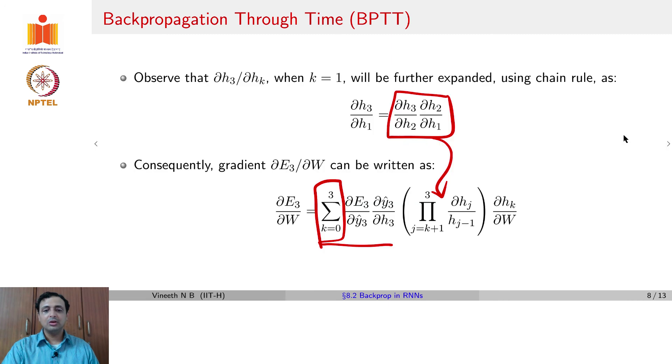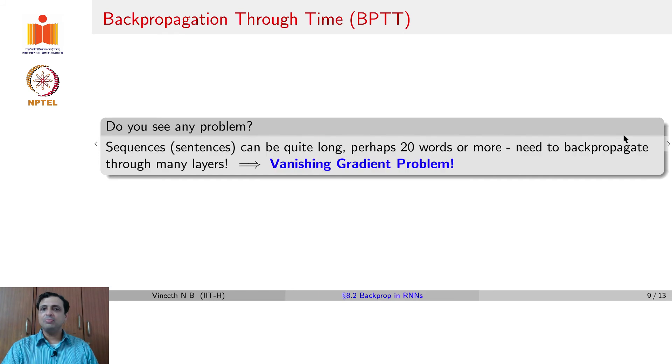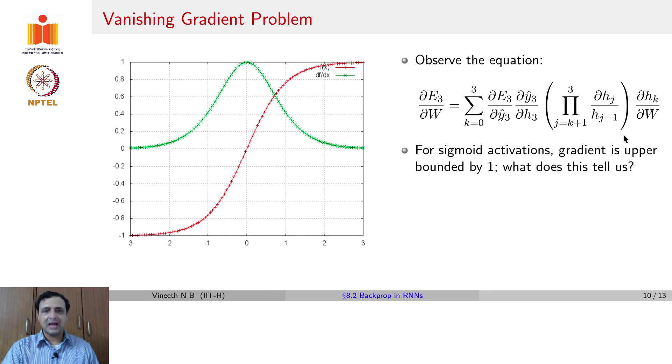So if you saw on the slide earlier, you would have this term, which continues to multiply these activations across multiple time steps. Now, why could that cause a problem? If your gradient for each of those values is less than 1, the multiplying these terms will lead to a vanishing gradient problem, because the multiplication of values less than 1 will quickly go to 0. So is this really a problem? Let us consider say a sigmoid activation function that we use in a layer in the RNN. So we know that the sigmoid function is upper bounded by 1, the values lie between 0 and 1. Let us even if we took a tanh activation function, it would lie between minus 1 and 1.